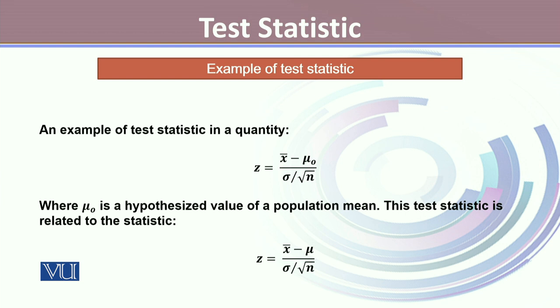Here in this statistic, x bar is the sample estimate, mu naught is the hypothesized value, whereas sigma is the standard deviation from the population and n is the sample size. Where sigma over square root n is the standard error of estimate.